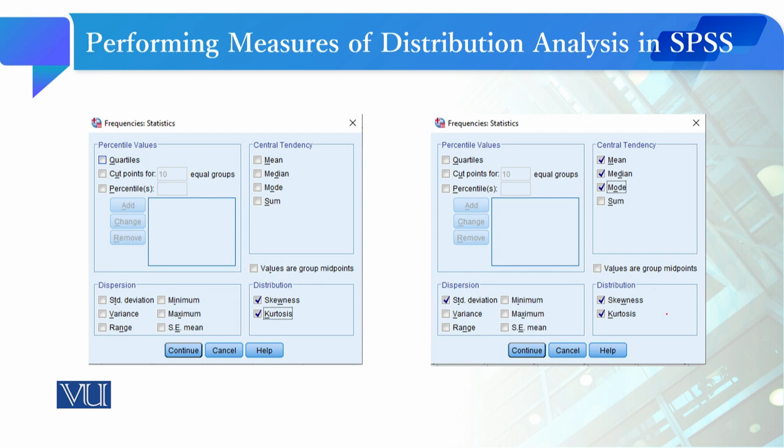In descriptive analysis, you will see central tendency, dispersion, and distribution because it has all features including percentile values, so you can see all the features that you can perform.